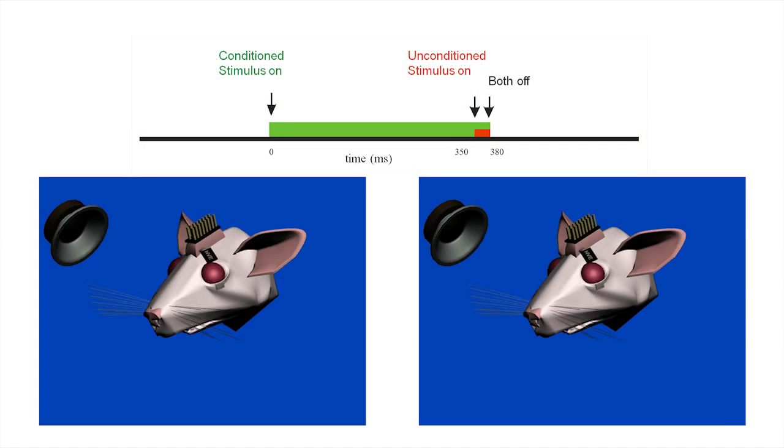In this test the animal learns to recognize a conditioned stimulus such as a tone and to react with an eye blink response after a particular time interval. The length of this interval is determined by the duration between the onset of the tone and the onset of the unconditioned stimulus, which here is an air puff on the eye.